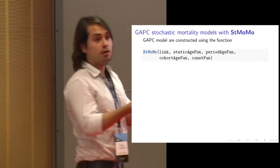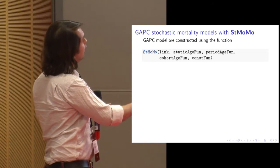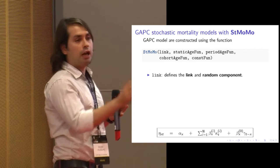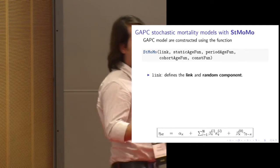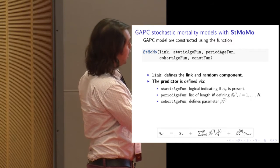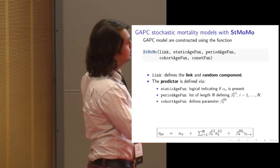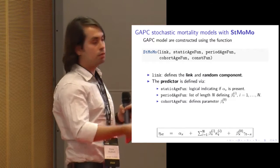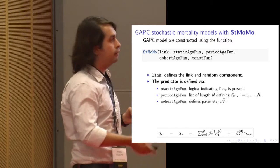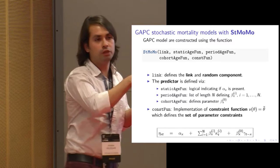In StMoMo, a mapping function defines each component of the model. The StMoMo function is used to define a generalized stochastic mortality model. You specify the link function — log with Poisson, or logit with binomial — a static age function indicating whether you have an alpha-x term, a list defining the number and form of period beta-x functions, a specification of the cohort effect, and a constraint function implementing the identifiability constraints, which is typically the most difficult part.